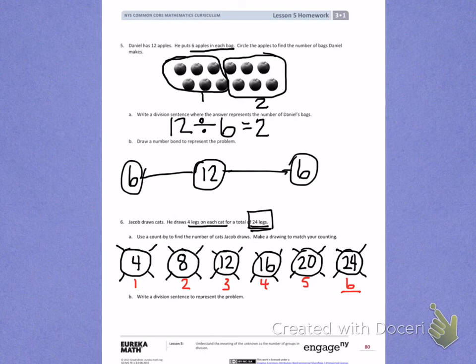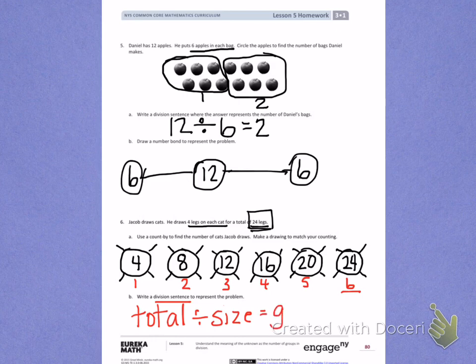On your own, write a division sentence to represent the problem. Remember when we divide, we have the total amount we started with divided by the number of the size, which equals the number of groups. On your own, use numbers to represent those words.